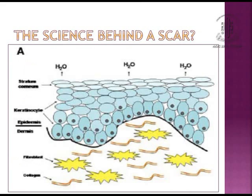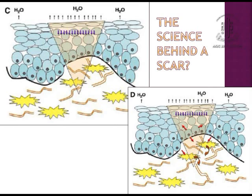Let's see the science behind a scar. Normally the stratum corneum will limit the transepidermal water loss, but after injury there is increased water loss from the stratum corneum, which leads to signaling into the keratinocytes, leading to production of cytokines, which further will stimulate dermal fibroblasts, proliferating them, and collagen is produced in far greater quantities, forming a scar.